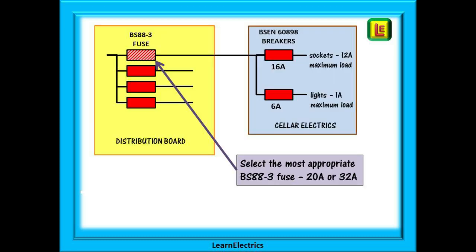For this scenario we have a distribution board populated with BS88-3 fuses. A circuit is to be taken from one of the fuses into the cellar where a small consumer unit is installed with just two MCBs. A 16 amp breaker for the socket and a 6 amp one for the lights. There will only be two sockets on this circuit and the attached equipment draws less than 12 amps in total. The lighting circuit feeds two luminaires drawing less than one amp.